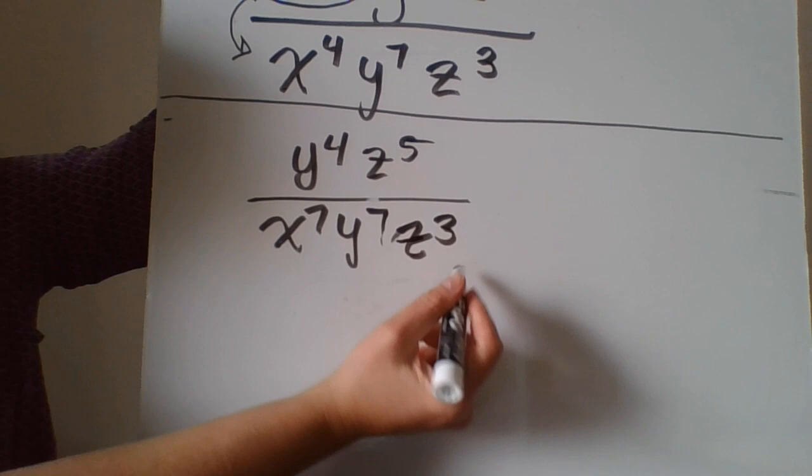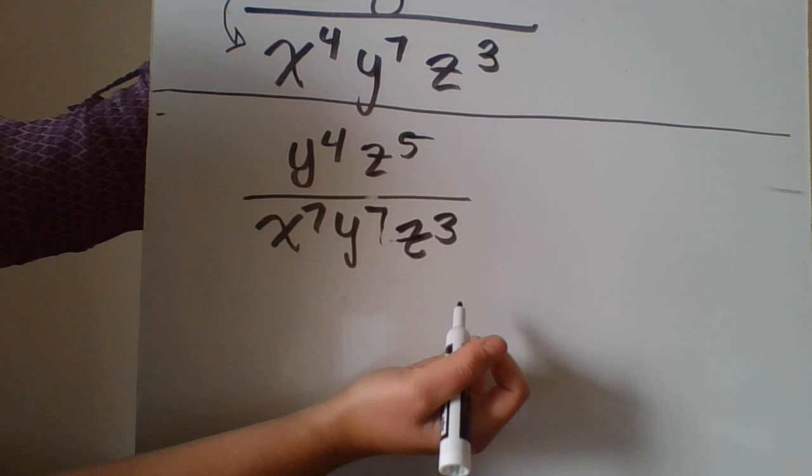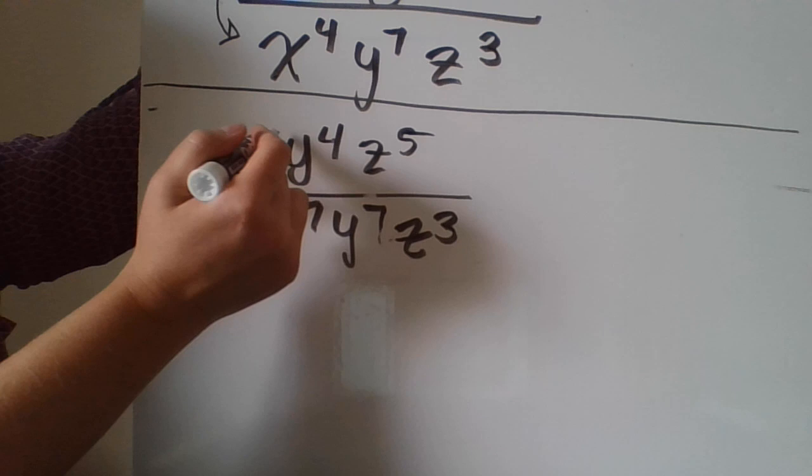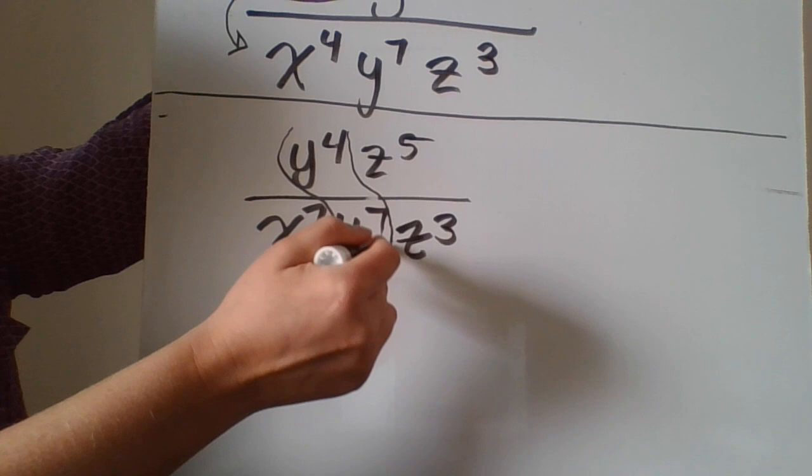And I make a mark through my z's here because they look like twos. So that's how you know it's a z. So now I'm going to match up my bases. Well, all my x's are done. I have my y's here and my z's there.